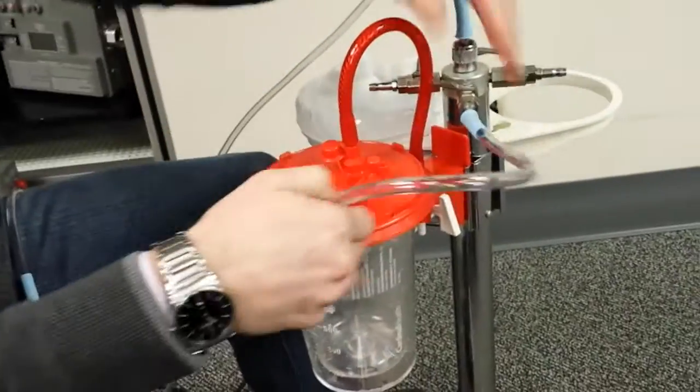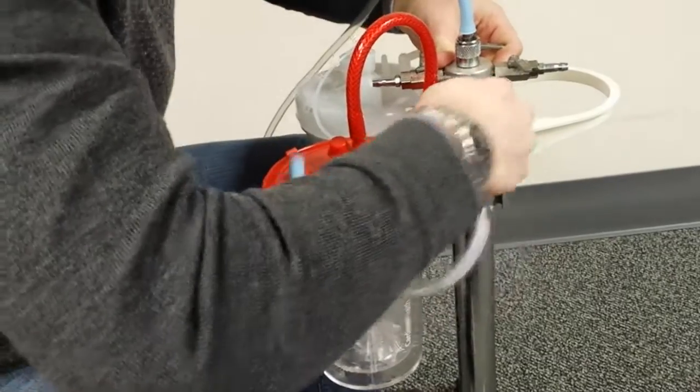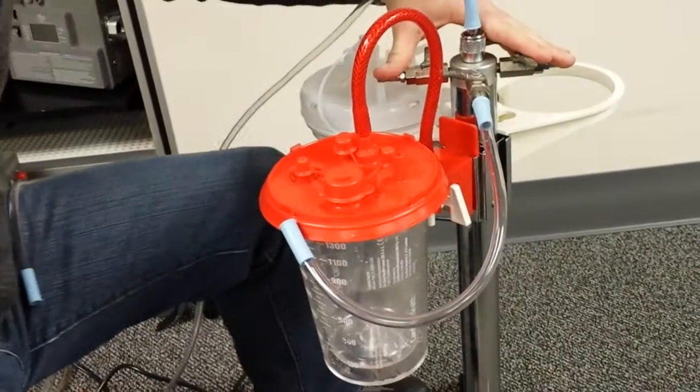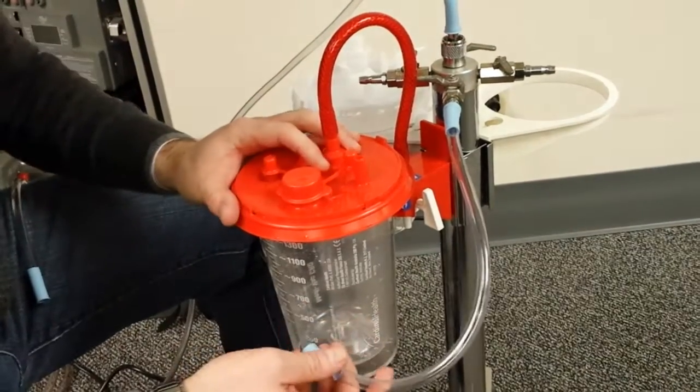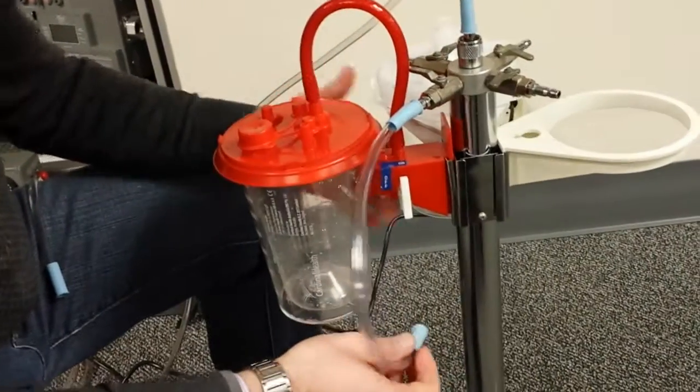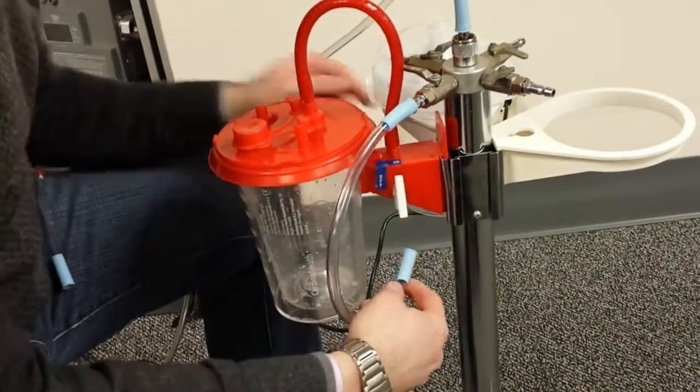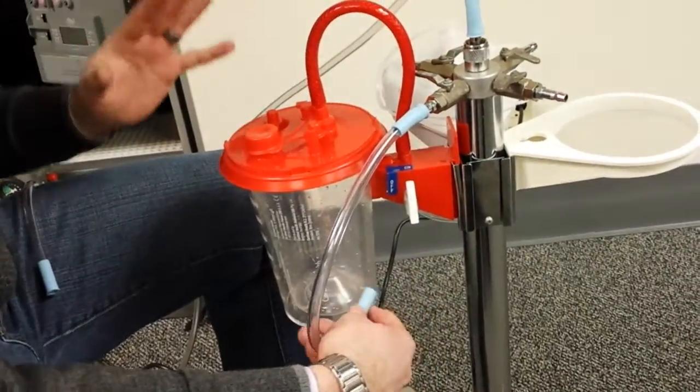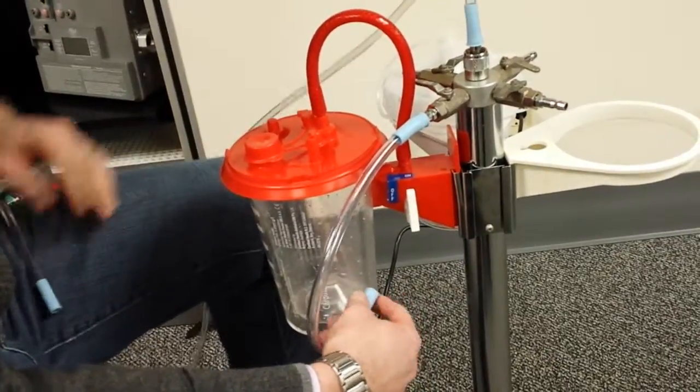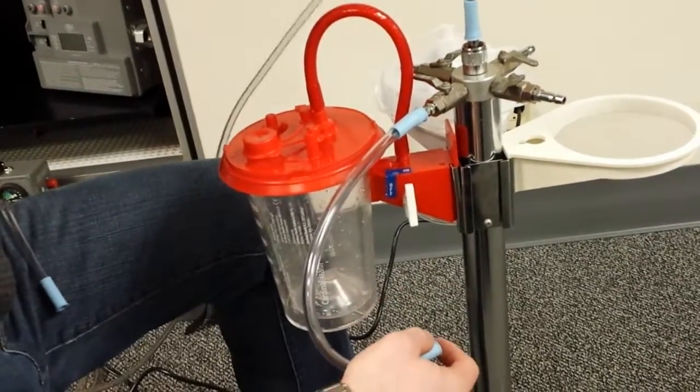Now, if you're using our canister stand, the one you have probably only has two connections on it. But that being said, it's hooked up the exact same way. What you're going to do if you want to hook up canisters in tandem, and have both canisters fill up from one suction tubing line, you're going to take your vacuum source.